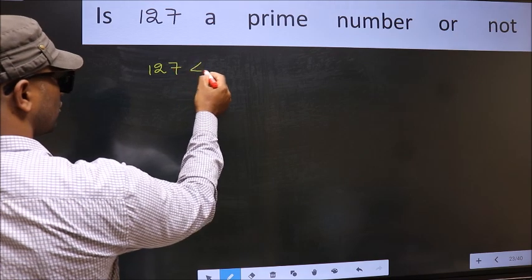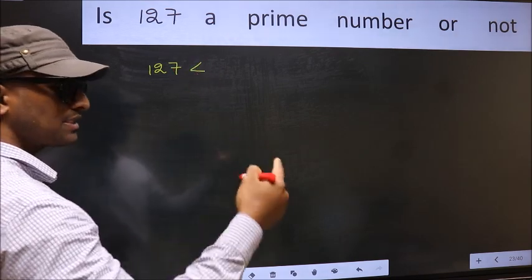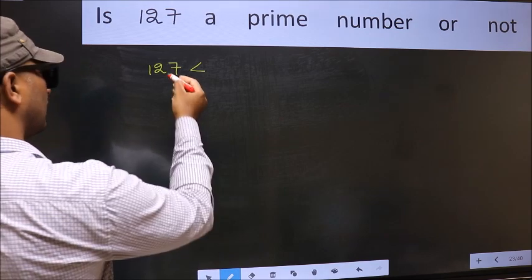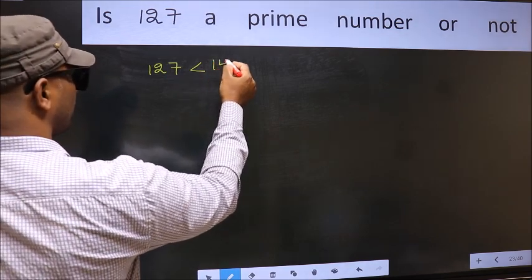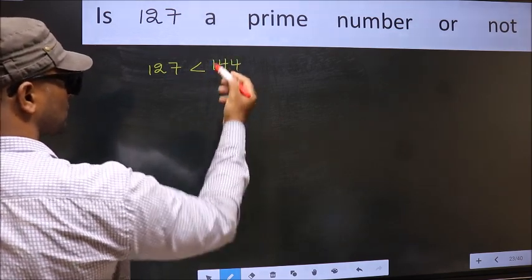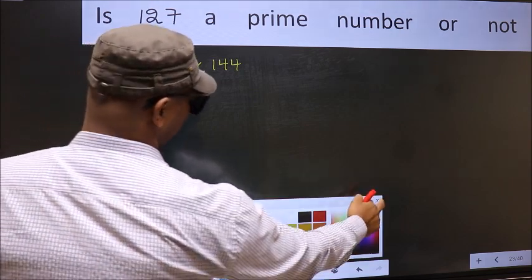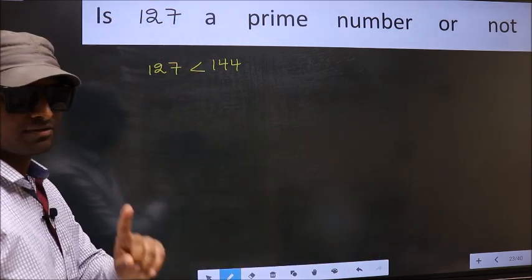This is close to which perfect square number? This is close to 144, a perfect square number. This is your step 1.